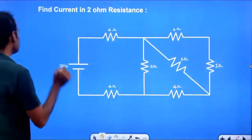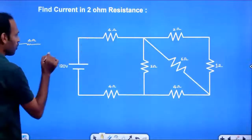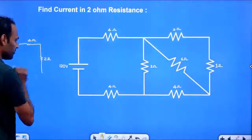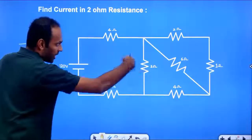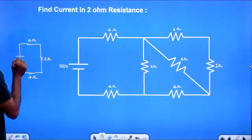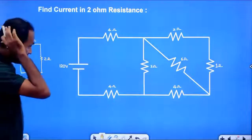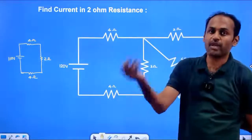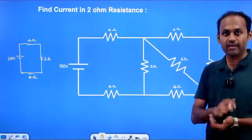Finally, this circuit is already reduced. We have 4 Ohm, 2 Ohm, and 4 Ohm — three combinations in series. The series effective is 4 plus 4 is 8, and 8 plus 2 is 10 Ohm. You can check out that video to know which resistors are in series and which are in parallel.